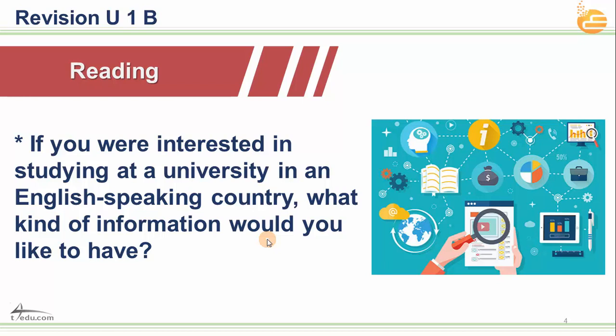In the reading text for Unit One, we covered careers and future choices. If you are interested in studying at a university in an English-speaking country — the United States, Canada, Australia, Britain, or parts of Europe — what kind of information would you need? You'd want to know the university's ranking, available branches, accreditation in your country, campus hours, and services.